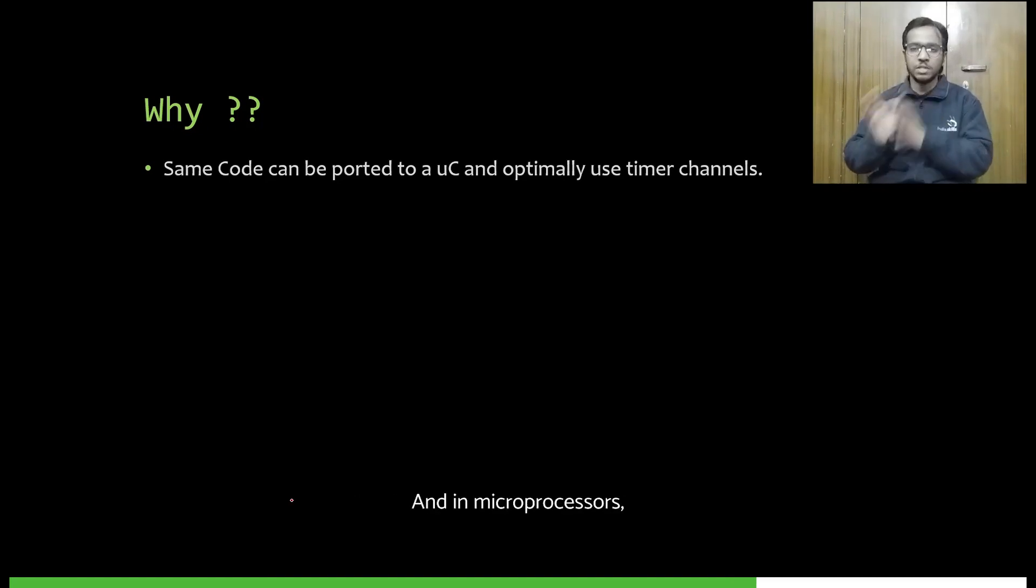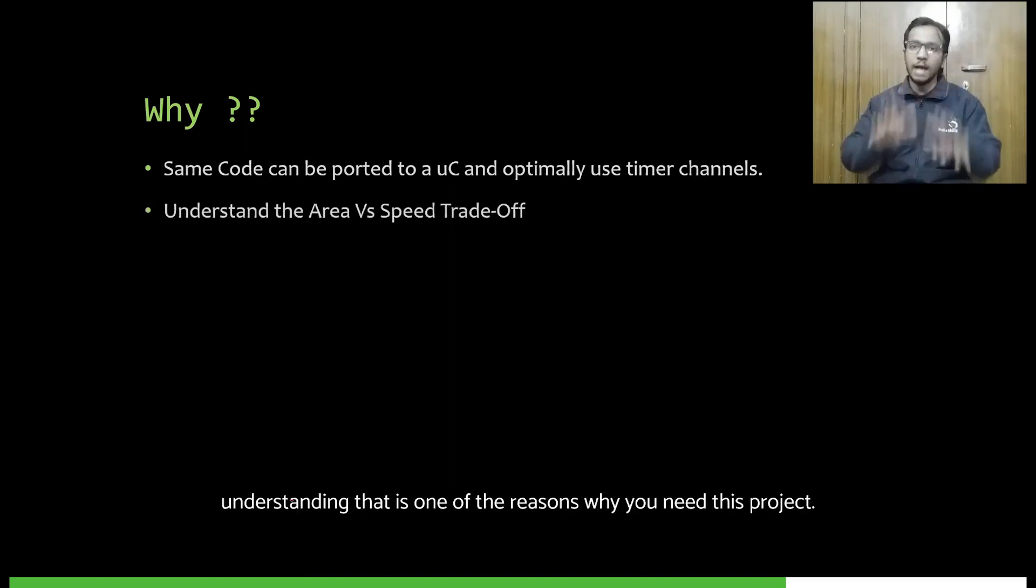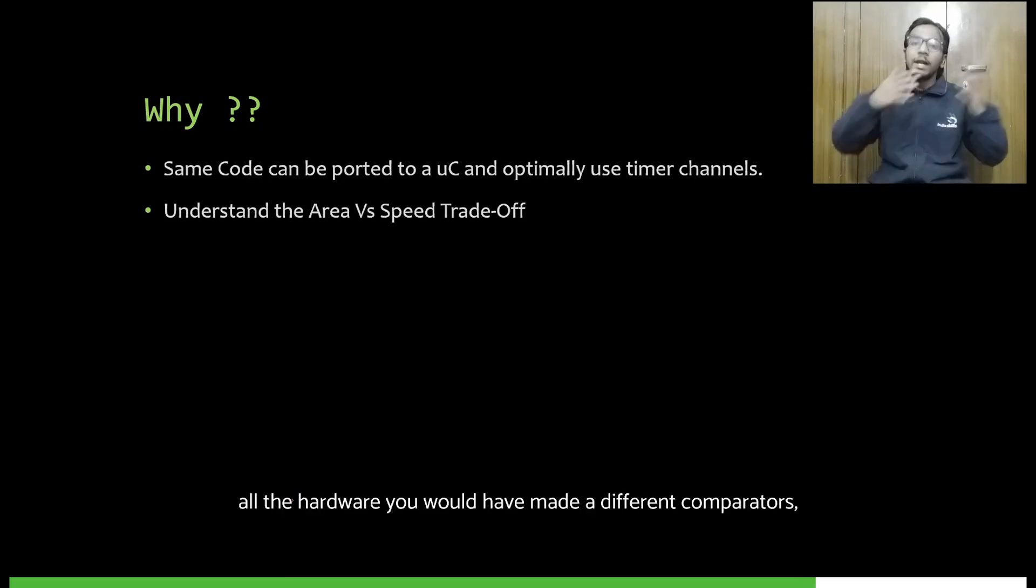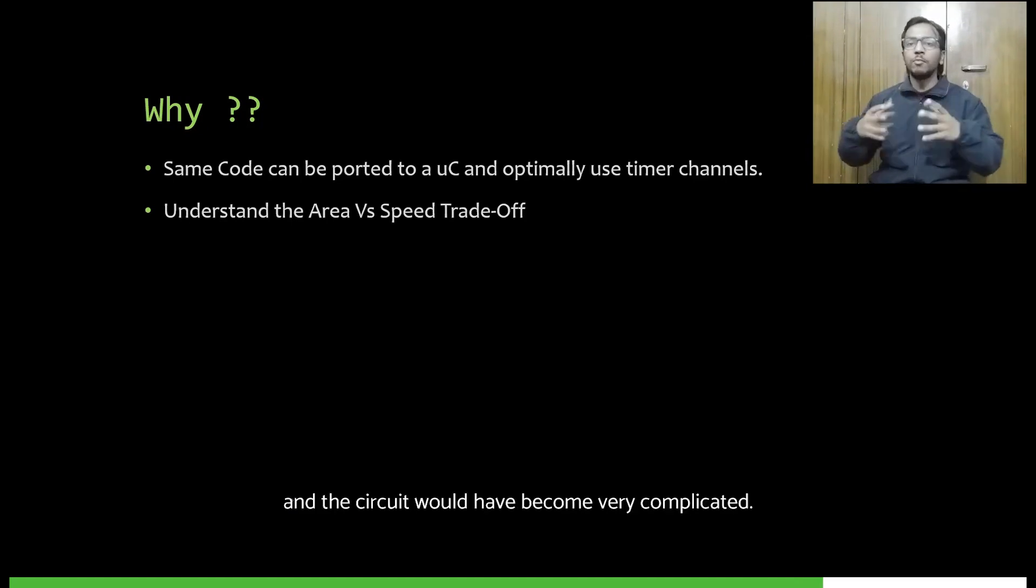The next reason is the area versus speed trade-off—understanding that is one of the reasons why we made this project. If you think about it, you could have simply made eight different counters and made eight different assign statements. Assign statement is implemented on hardware by using a comparator. So on the hardware you would have made eight different comparators, eight different counters, and the circuit would have become very complicated. The area would have increased, although it would have been very fast. What our implementation does is that we do a trade-off with speed and area. We have a smaller area but we compromise a little on the speed. Because the PWM output that we are getting and the PWM output that we were getting previously, both of them are still imperceptible to the human eye. So here we can trade off the area.